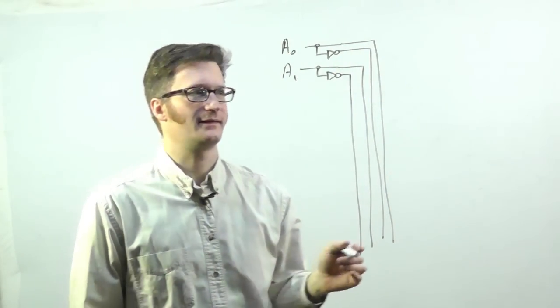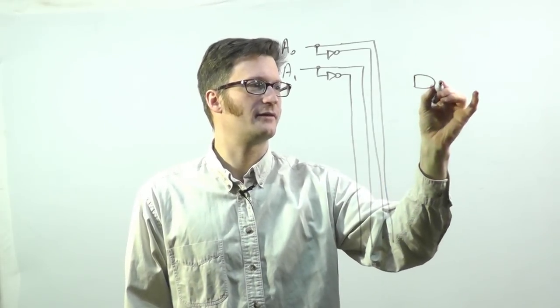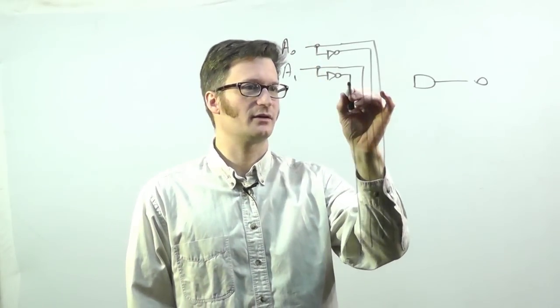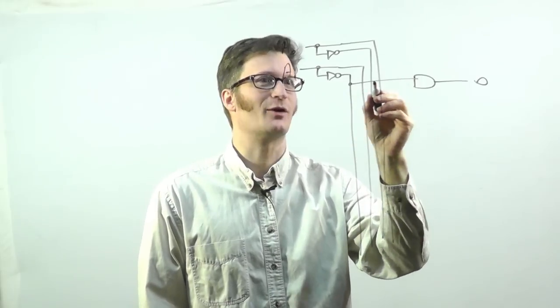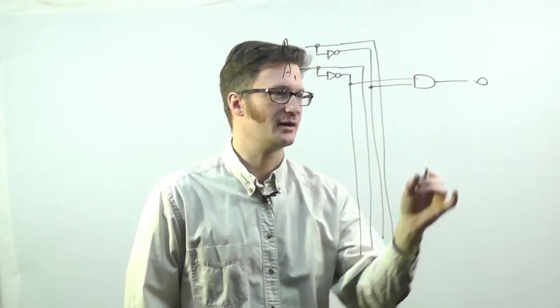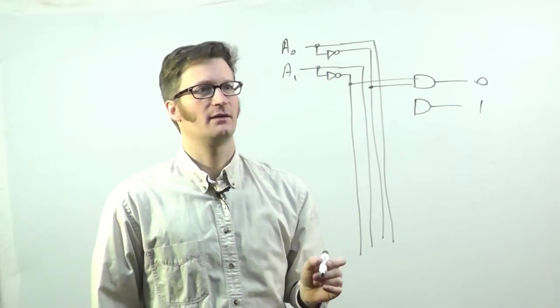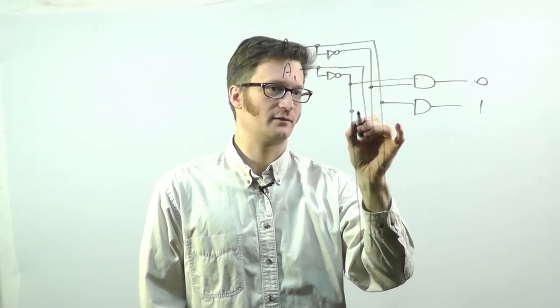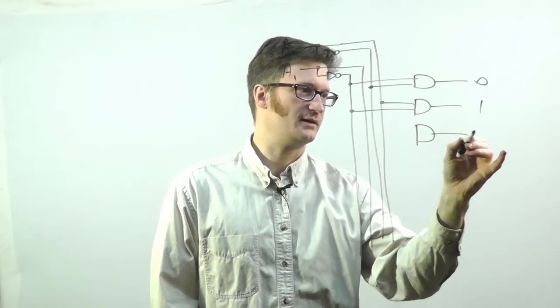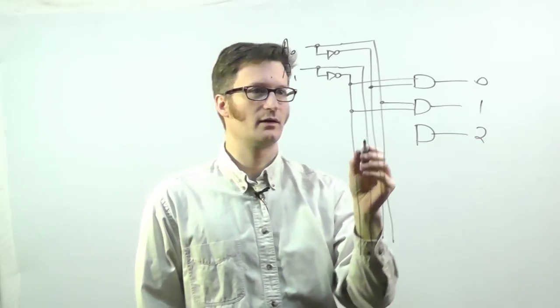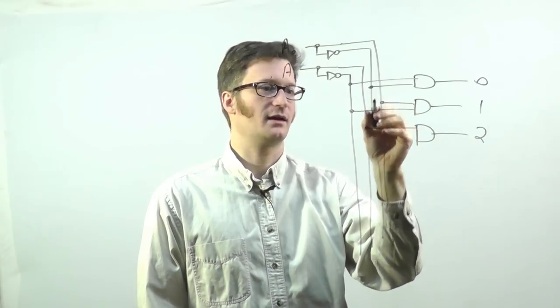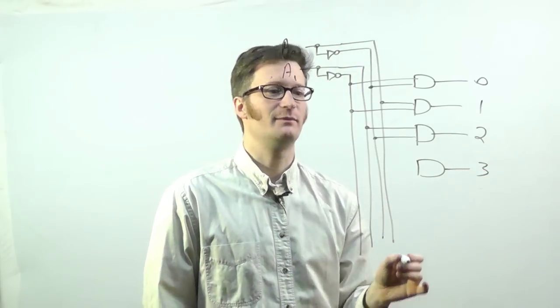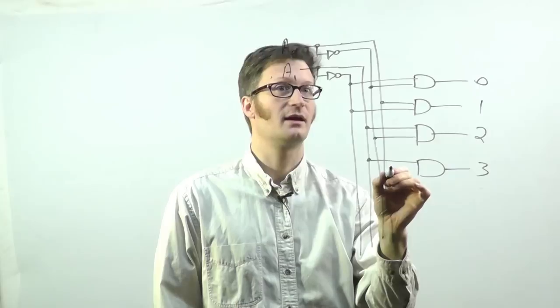A decoder is really just a bunch of AND gates. So if I am looking to decode the value zero, where A0 is zero and A1 is zero, I'm just going to look for A1 bar, A0 bar. And if I'm going to decode the value one, that would be a one coming in here and a zero coming in here. So I've got that one. And if I'm going to decode two, this one needs to be high, this one low. So I'm taking this one, and this one. And finally, for three, they both need to be high. And so I'm going to take this one, and this one.